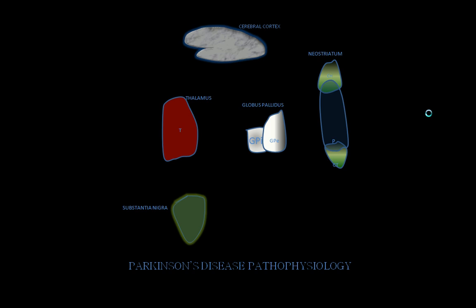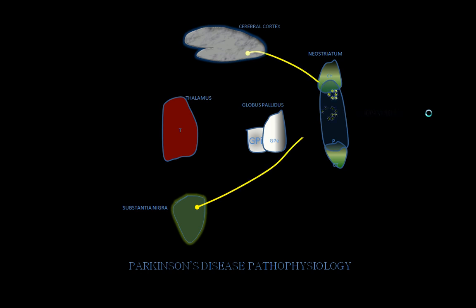Here, at the top, the cerebral cortex is located. In the right corner is the neostriatum, which includes the caudate and putamen. On the left side is the thalamus. At the bottom, the substantia nigra is located, and in the center, the globus pallidus internus and externus are located. Normally, neurons from the substantia nigra release dopamine into the neostriatum, and neurons from the cerebral cortex release the neurotransmitter acetylcholine into the neostriatum.